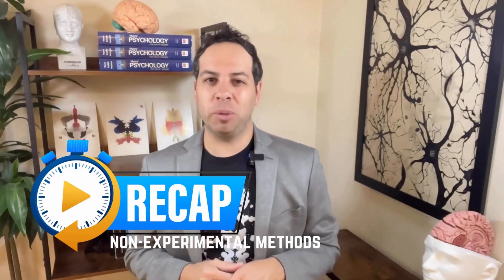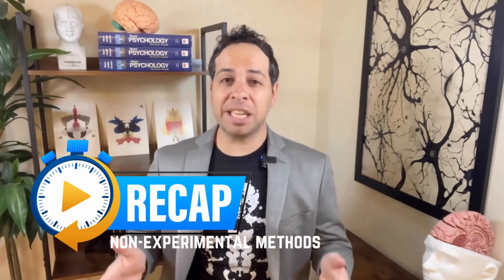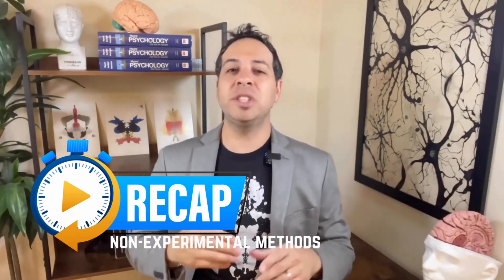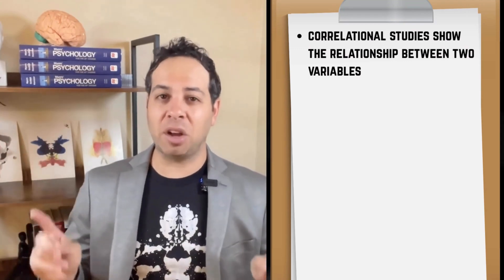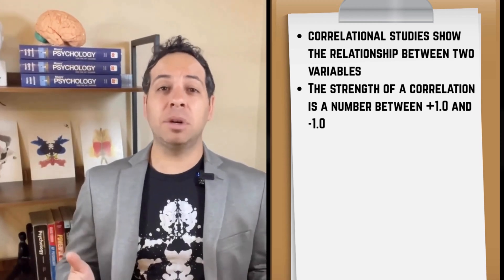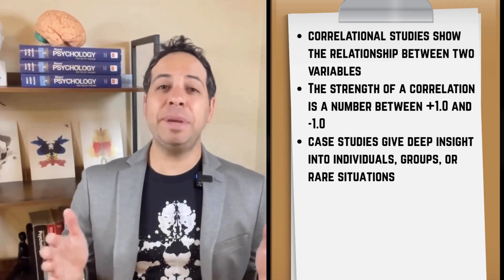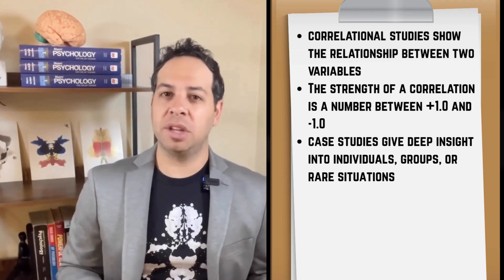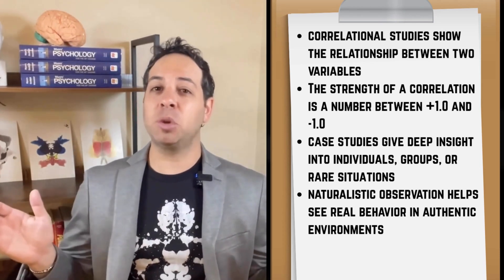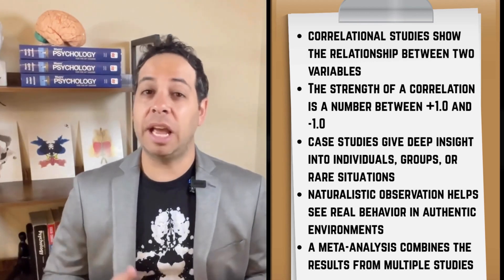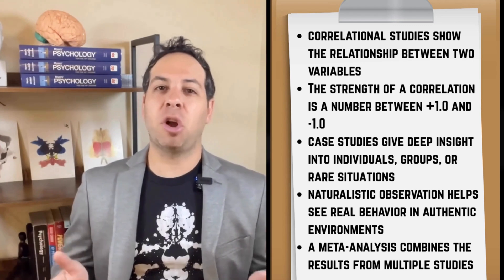Let's lock in with a quick recap. We just explored the world of non-experimental methods — how psychologists study behavior when running an experiment is impossible, not legal, or not ethical. Correlational studies show the relationship between two variables, but remember: correlation does not imply causation. The strength and direction of correlation is shown by a number between negative 1.0 and positive 1.0, and scatterplots don't lie. Case studies give us deep insight into individuals or rare situations, but they can't be generalized to everyone. Naturalistic observation helps us see real behavior in real settings, as long as people don't start acting weird because they know they're being watched. And meta-analysis is our research super tool, combining the results of multiple studies to spot patterns and get stronger, more reliable conclusions.